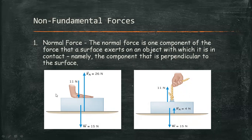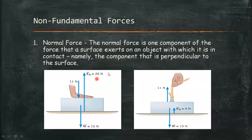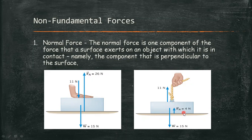In the first illustration, the weight of the object is 15 N and an applied force of 11 N results in an equal and opposite normal force of 26 N, in accordance with Newton's third law. In the second figure, a force of 4 N is applied to lift the object, and with a weight of 15 N, the resulting normal force is 11 N.